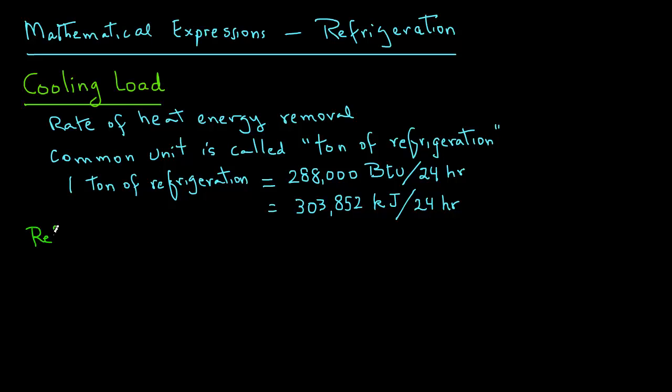Next we look at refrigerant flow rate. Refrigerant flow rate represents the amount of refrigerant flowing in the refrigeration system per unit time. And we can obtain that by dividing the cooling load, that is the rate of heat removal, divided by H2 minus H1.